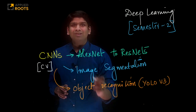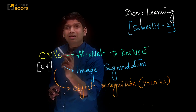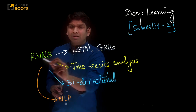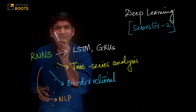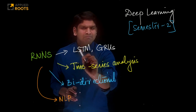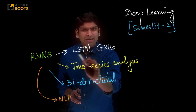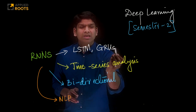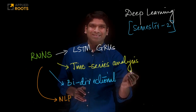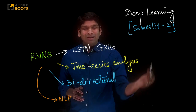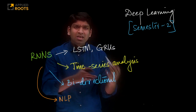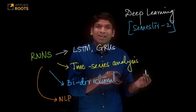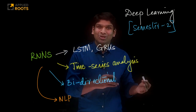This is very important if you are looking for careers in computer vision. The next topic would be recurrent neural networks. When we study RNNs, we will start with basic LSTMs and GRUs. We will also learn how LSTMs and GRUs can be used for time series analysis, because that is where they are very popularly used. We will also study variations of LSTMs.